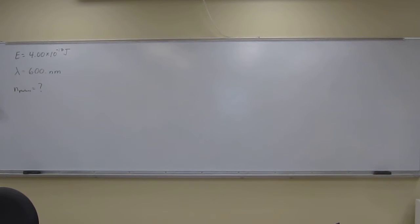Okay, let's do this problem. Are we ready? Yes. Okay, let's do it. This one says the retina of a human eye can detect light when radiant energy incident on it is at least 4.00 times 10 to the negative 17th joules. For light of 600 nanometer wavelength, how many photons does this correspond to?